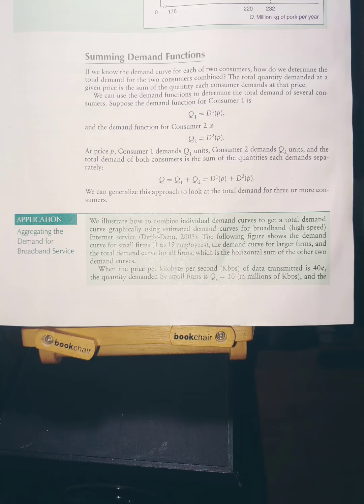Summing Demand Functions. If we know the demand curve for each of two consumers, how do we determine the total demand for the two consumers combined? The total quantity demanded at a given price is the sum of the quantity each consumer demands at that price.